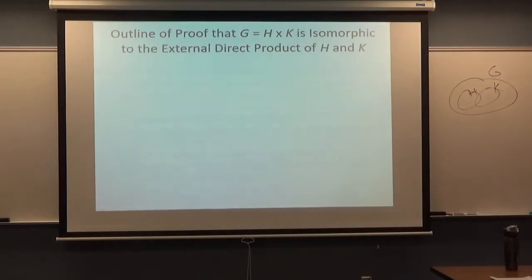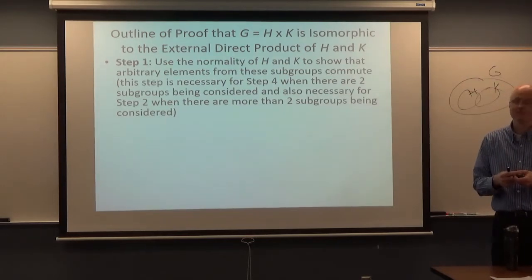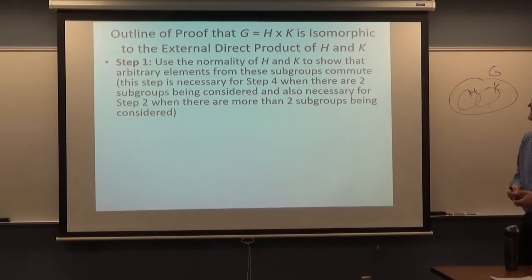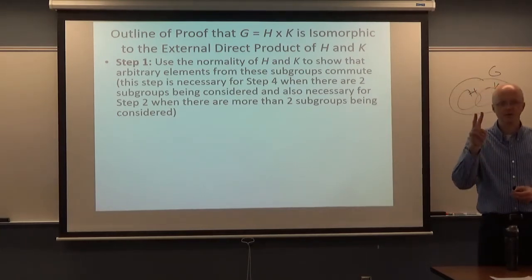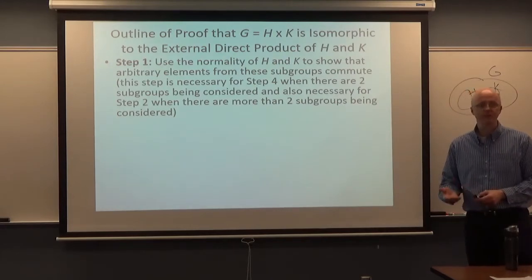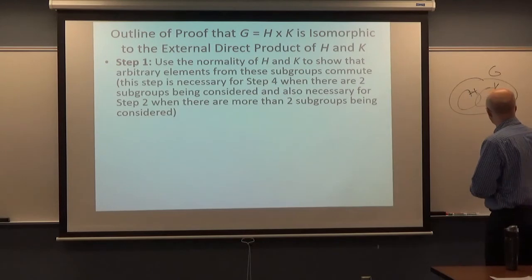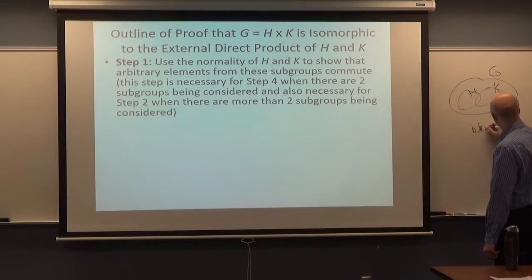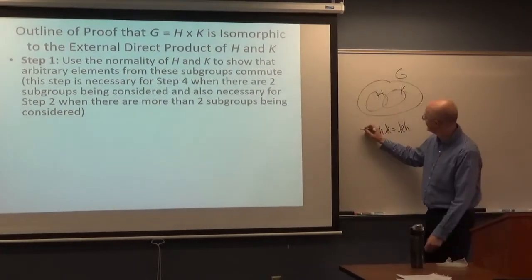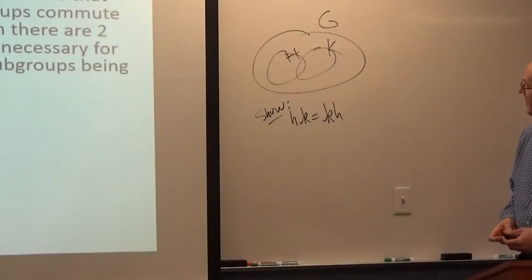Here's an outline of the proof with four main steps. Step one is to show that an element of H and an element of K — arbitrary elements — actually commute with each other. We use the normality of H and K to show that arbitrary elements of these subgroups commute. The goal is to show that little h and little k, arbitrary elements of H and K, commute.